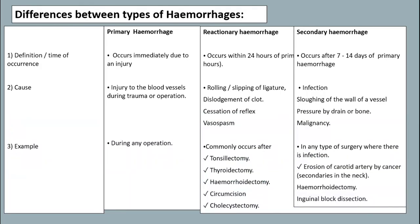Differences between types of hemorrhage: primary occurs immediately due to injury; reactionary occurs within 24 hours of primary hemorrhage; secondary occurs after 7 to 14 days. Primary hemorrhage is due to injury to blood vessels during trauma or operation. Reactionary occurs due to rolling of a ligature, dislodgement of a clot, or cessation of reflex vasospasm.